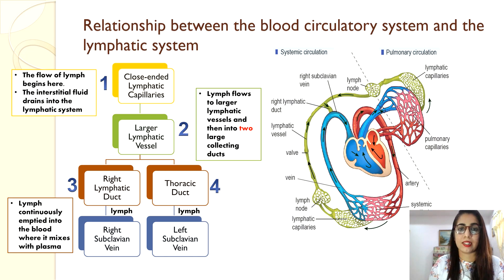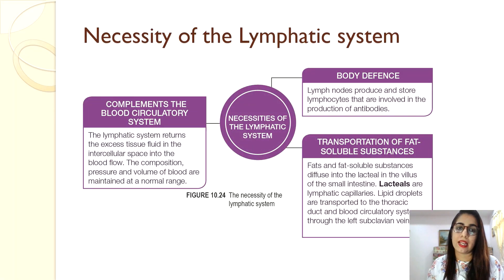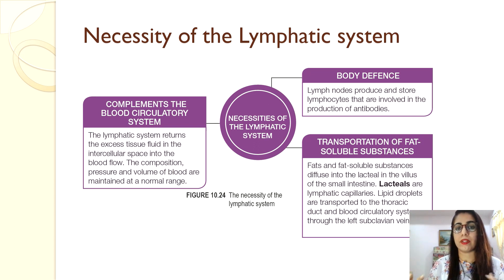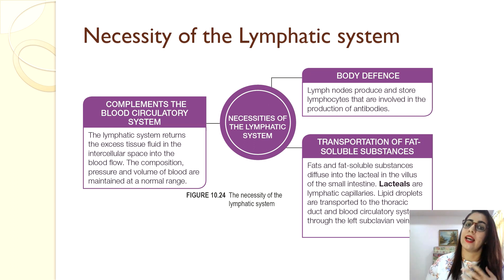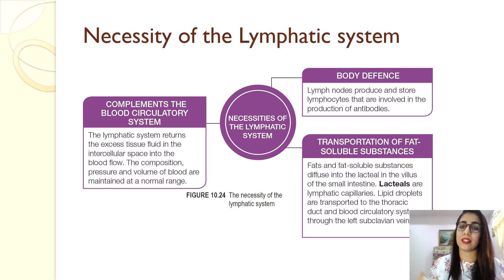The necessity of the lymphatic system: it complements the blood circulatory system by returning excess tissue fluid from intercellular spaces into the bloodstream, maintaining composition, pressure, and volume of blood within normal range. It also supports body defense, as lymph nodes produce and store lymphocytes involved in antibody production. Additionally, it transports fat-soluble substances that diffuse into the lacteals of the villi in the small intestine; these lipid droplets are transported through the thoracic duct into the blood circulatory system via the left subclavian vein.